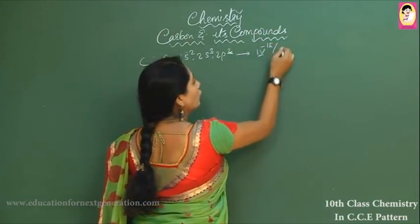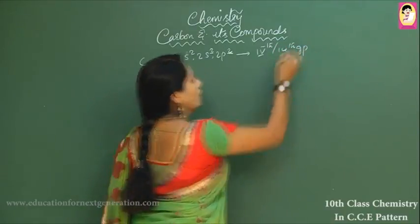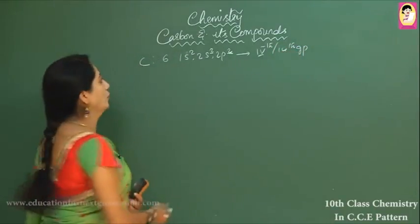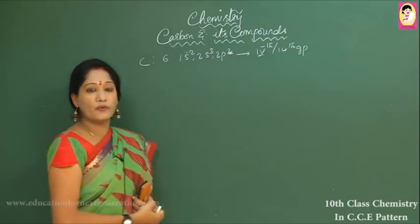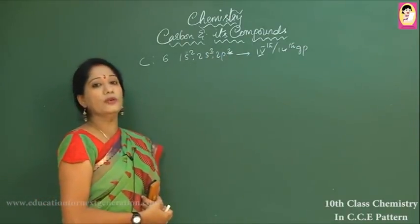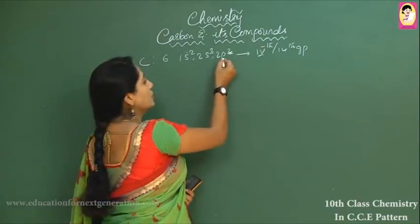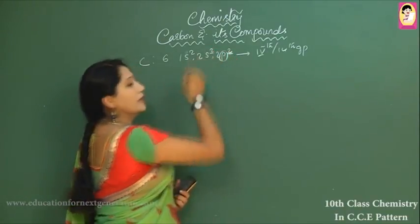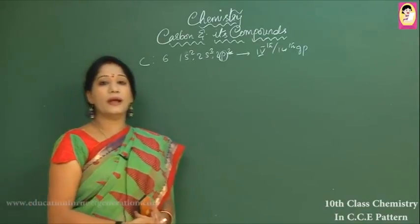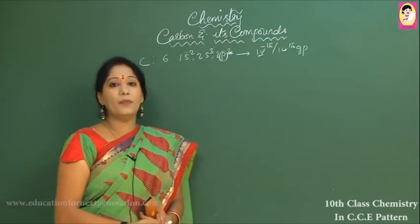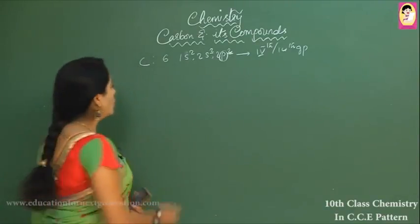Because of the presence of four valence electrons, carbon belongs to the fourth group or the fourteenth group. Since the differentiating electron is entering into the p orbital, it is called a p-block element.